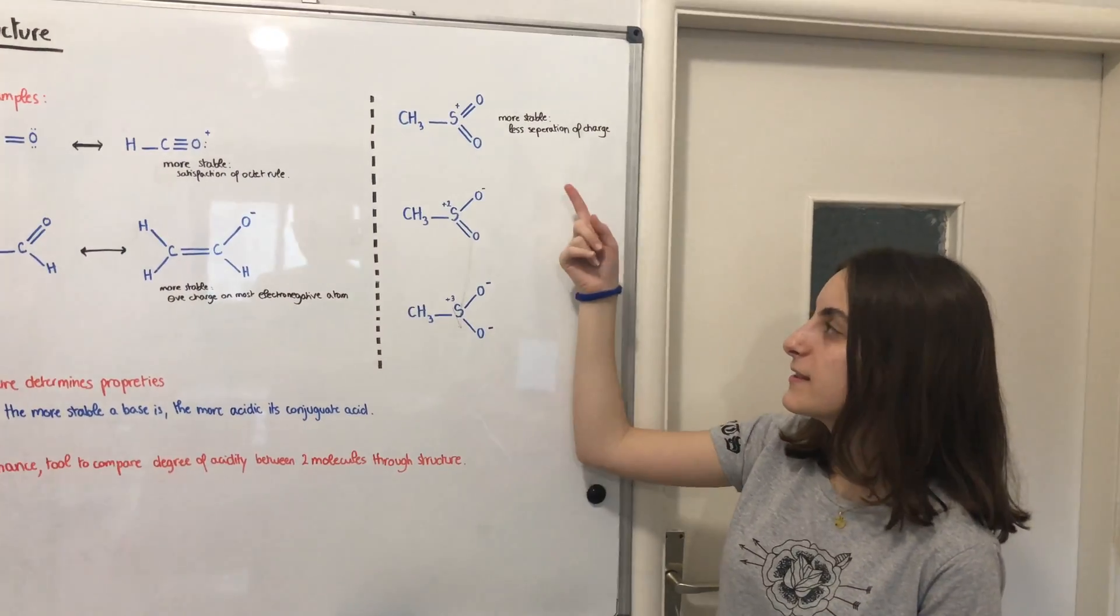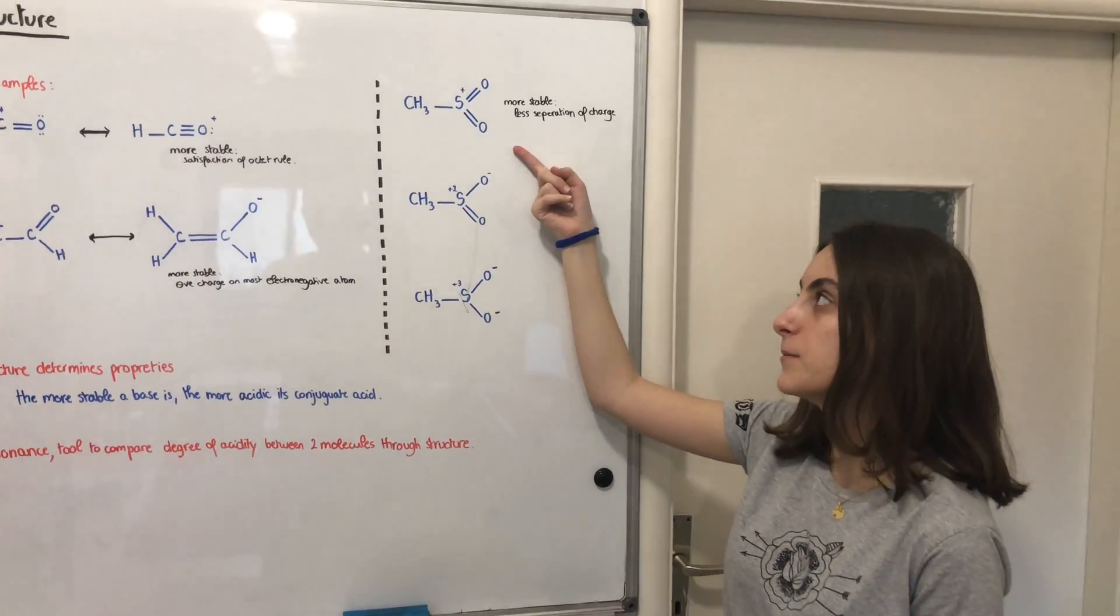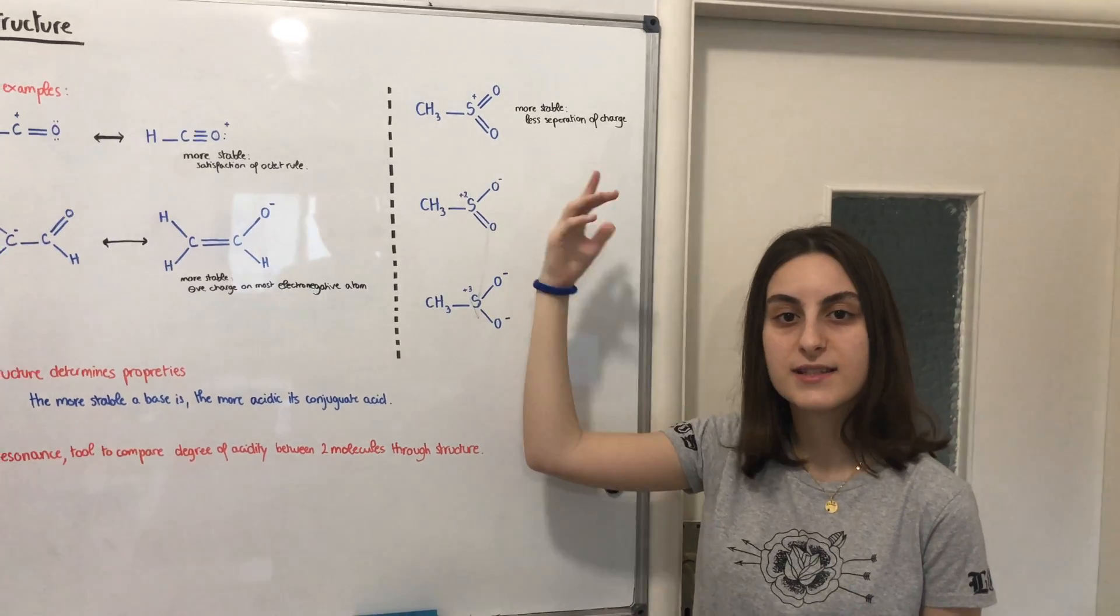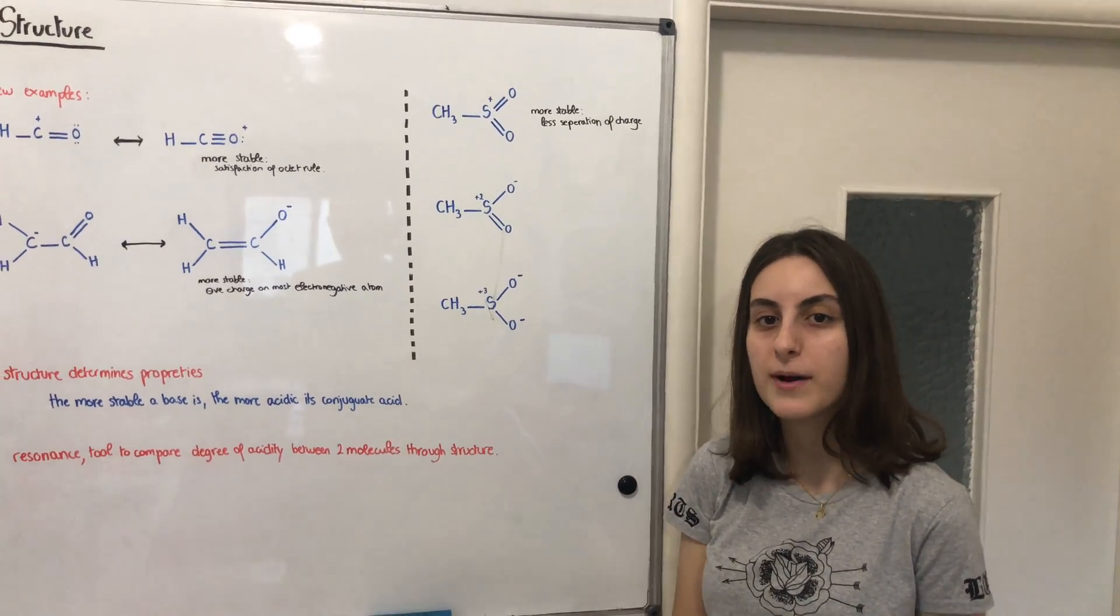In this example, we can see that the first resonance structure is the most stable, even though the sulfur exceeds the octet rule. And that's okay, because it's not a second row element.